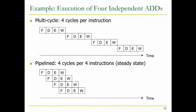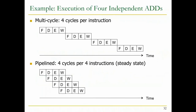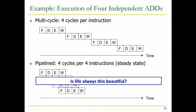But if you pipeline it, when you're decoding the first instruction you fetch the next one; when you're executing the first instruction you're decoding the next and fetching the one after. This is where the pipeline is full - all stages in the processing are occupied by instructions. In the steady state you're finishing one instruction per cycle, or four instructions in four cycles. Of course life is not always this beautiful, but with an ideal pipeline this is what you would get in terms of throughput. There are non-idealities we'll talk about.